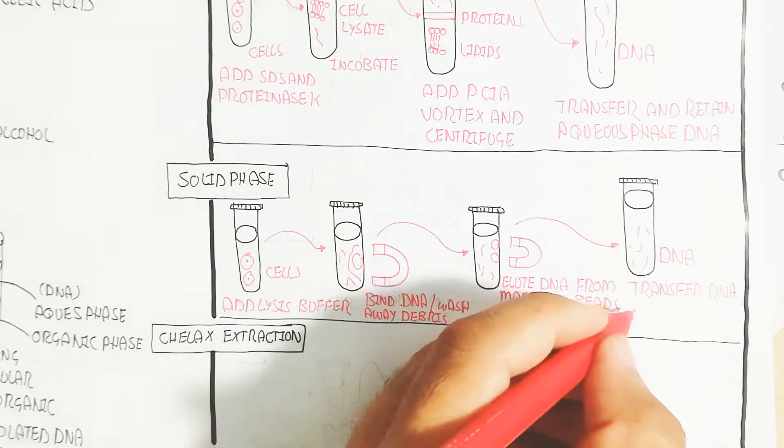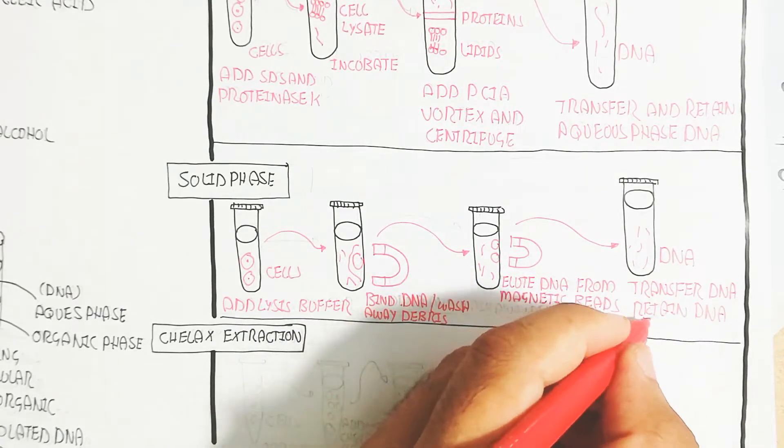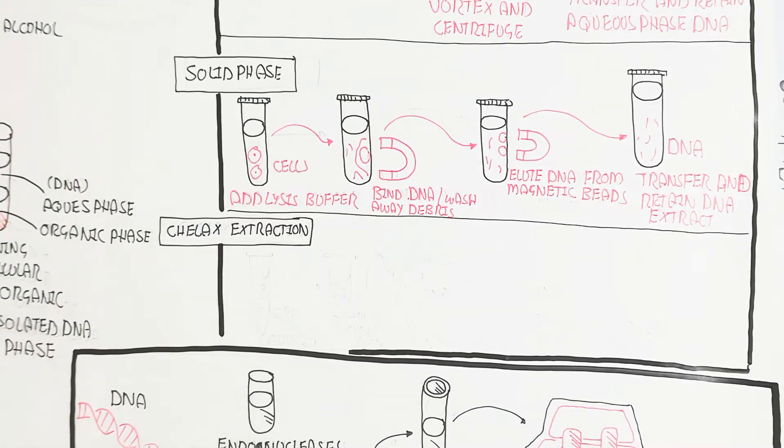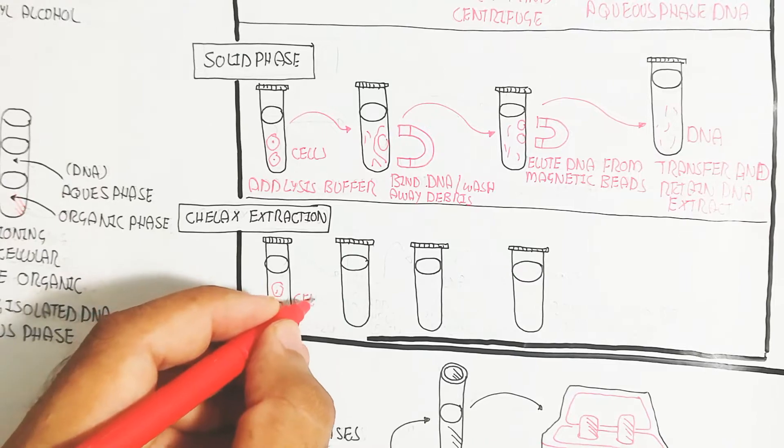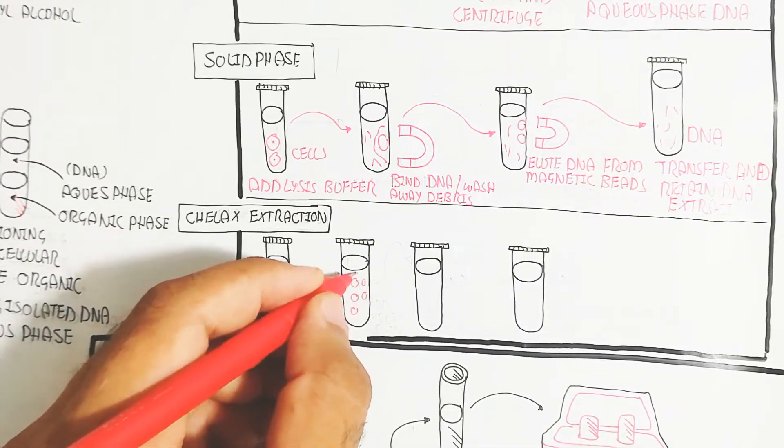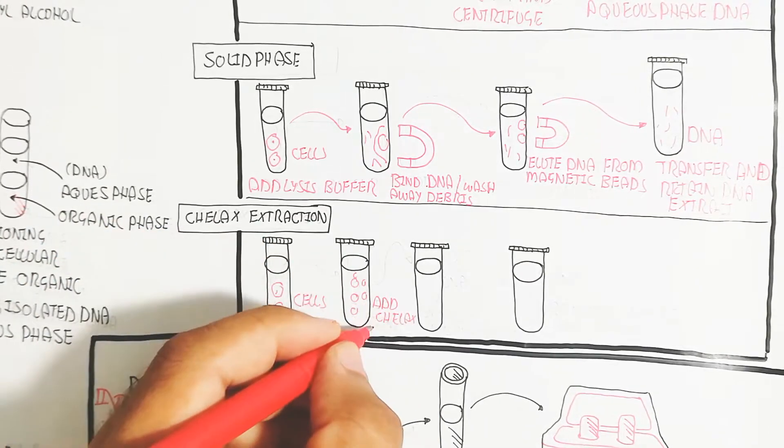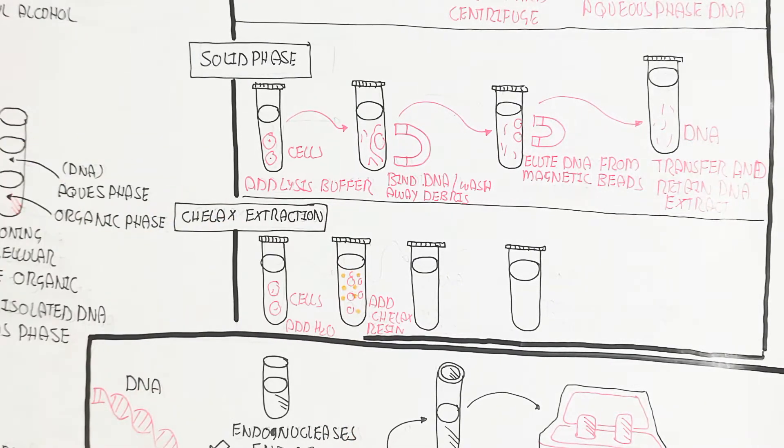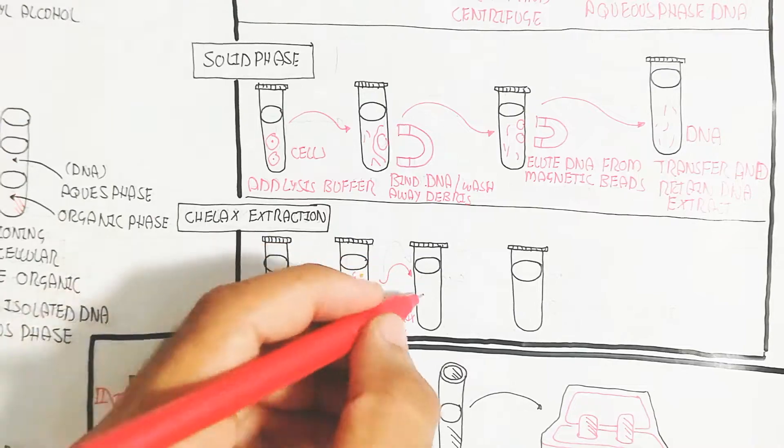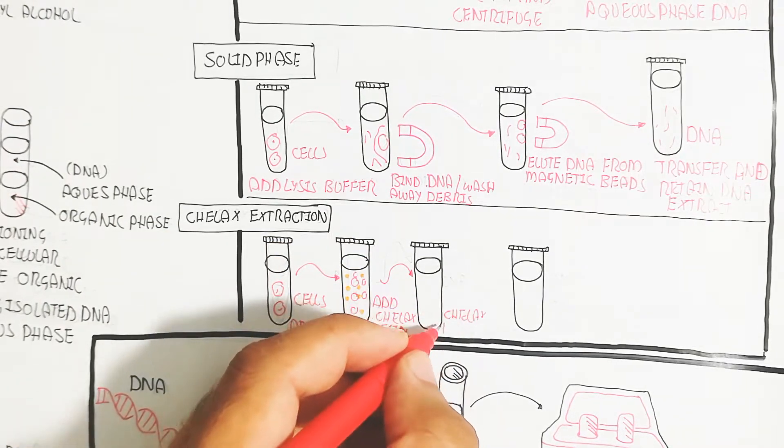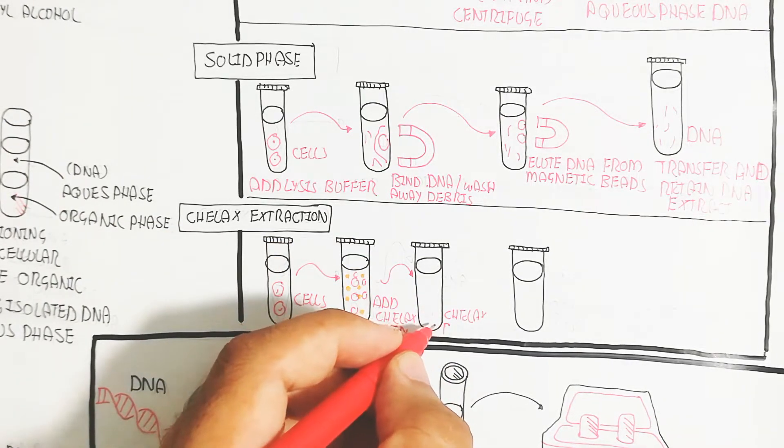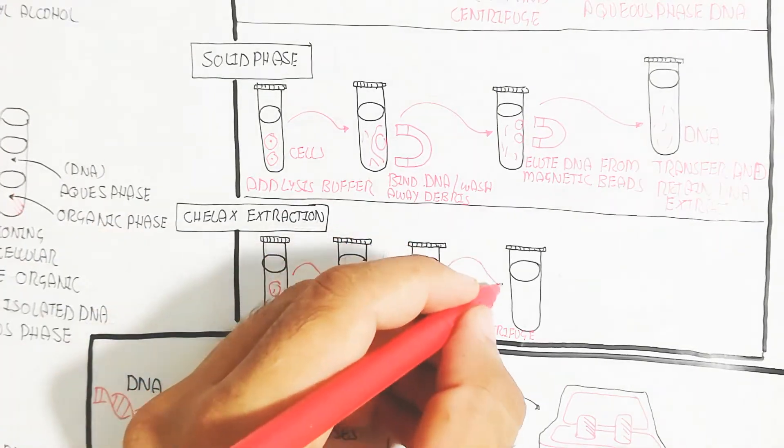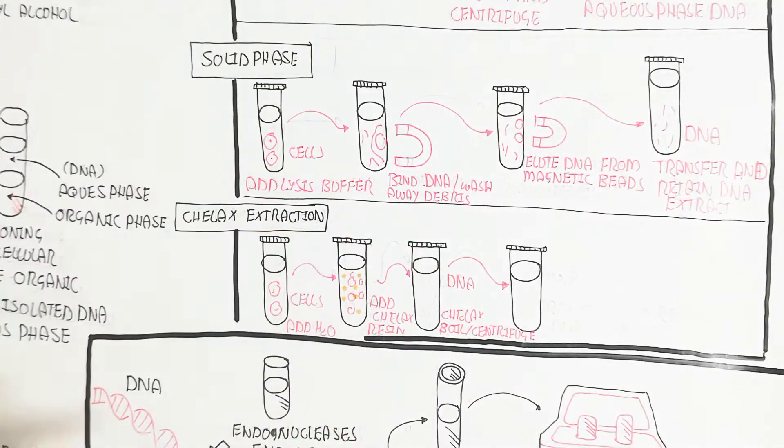The third method is Chelex extraction. The cells as a sample are mixed with water. When water is added, add Chelex resin, which will lead to boiling and centrifugation. After boiling and centrifuging, the DNA will be separate in the aqueous medium. Transfer, retain, and extract the DNA.